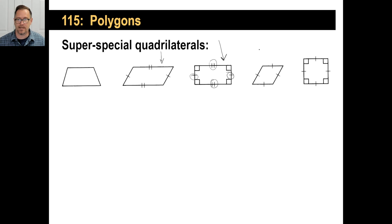This is called a rhombus, R-H-O-M-B-U-S. Now, you can tell that all four of these sides are congruent, and the opposite sides are also parallel. That's the definition of a rhombus.